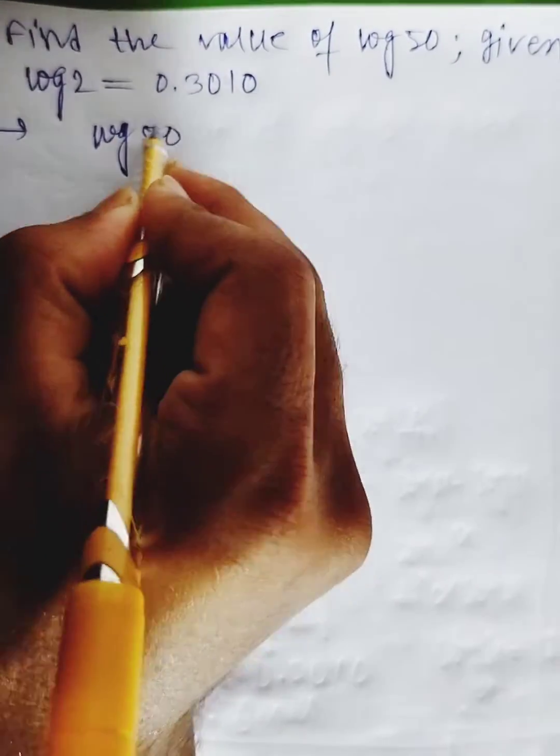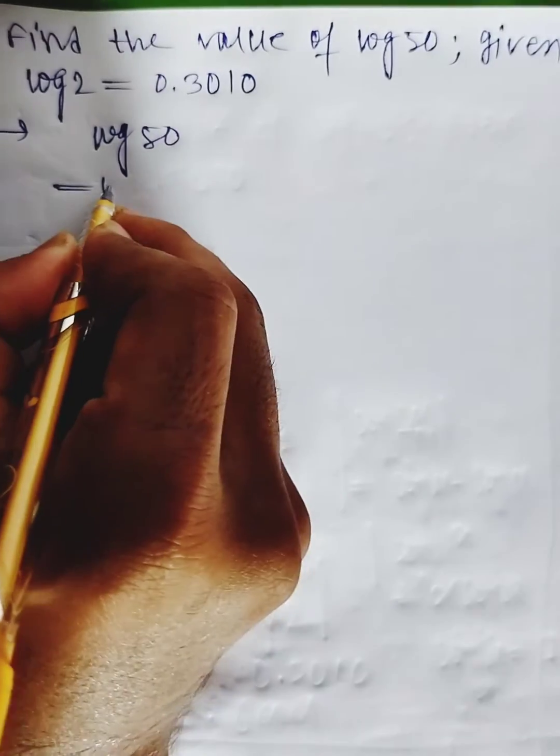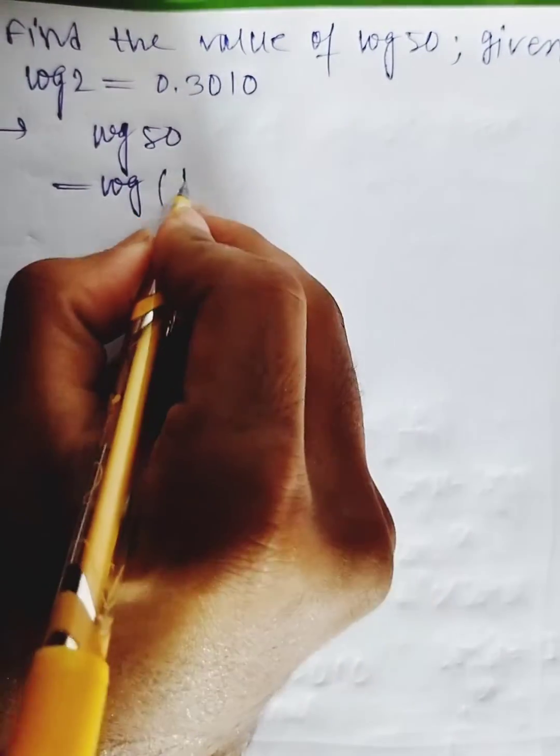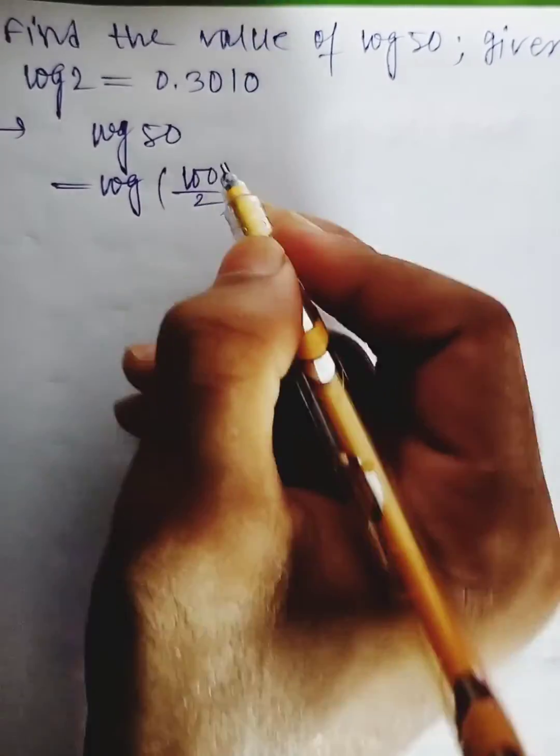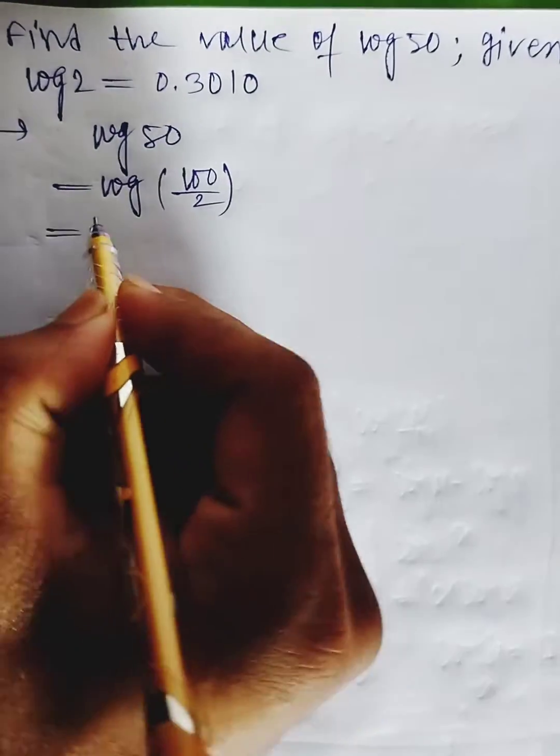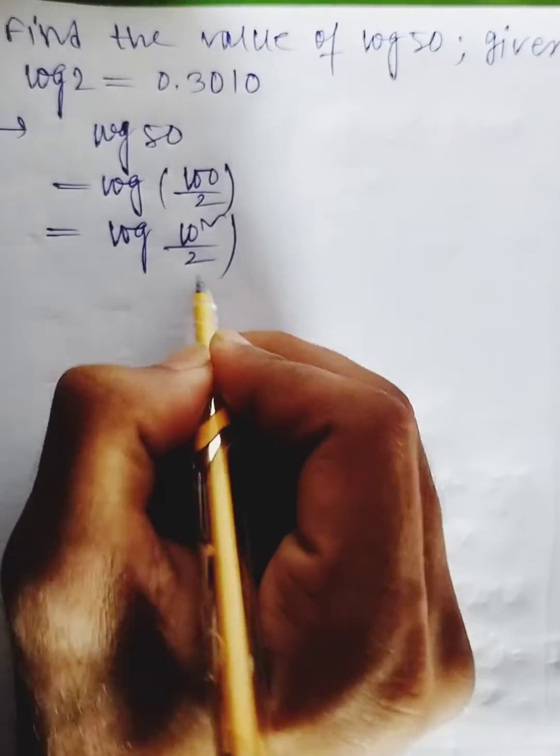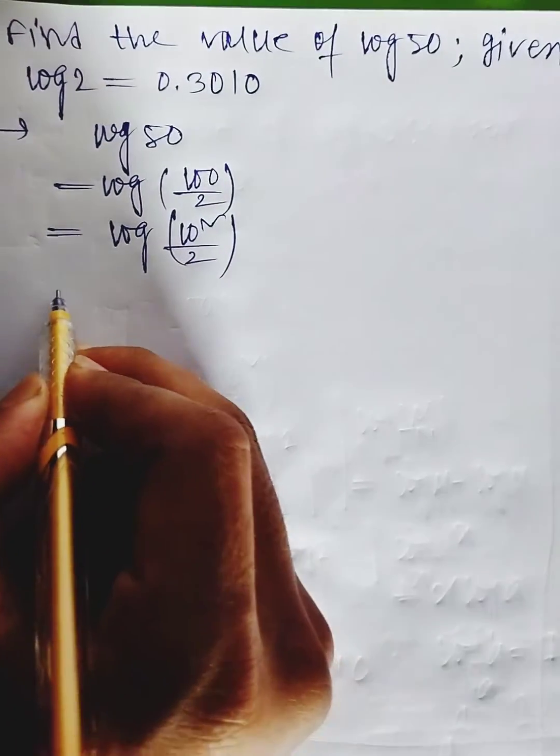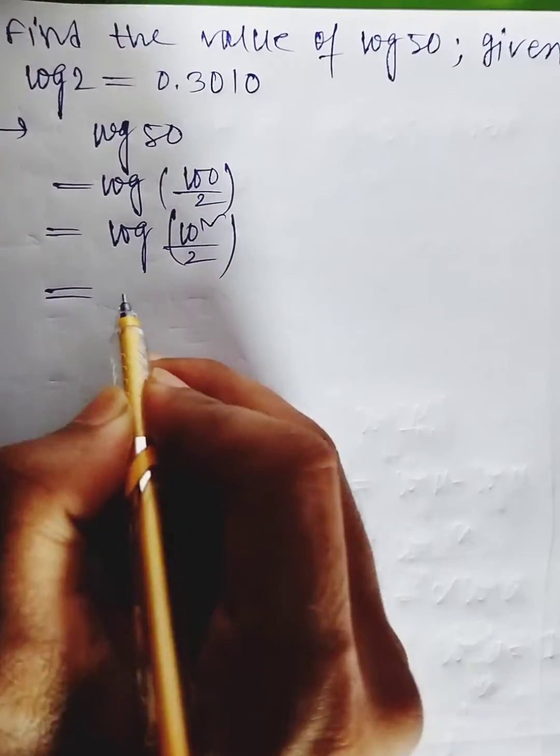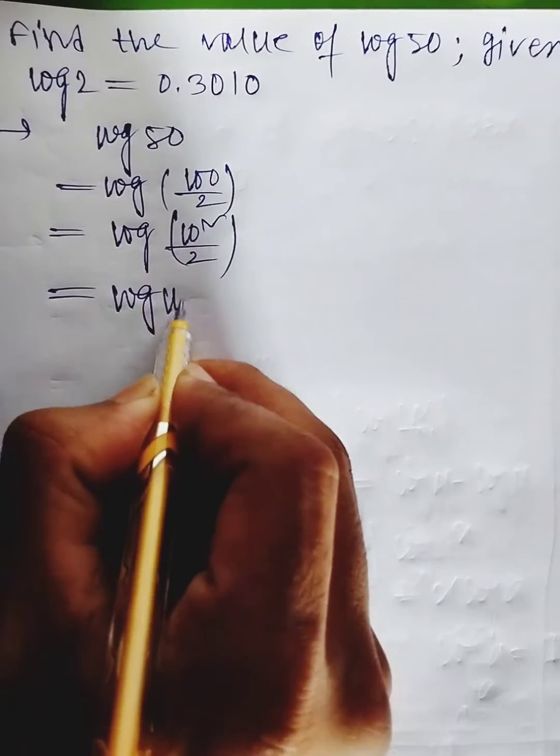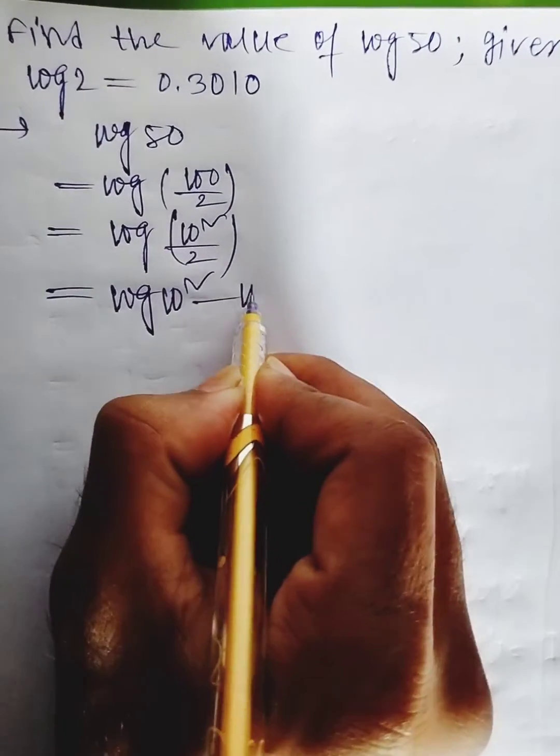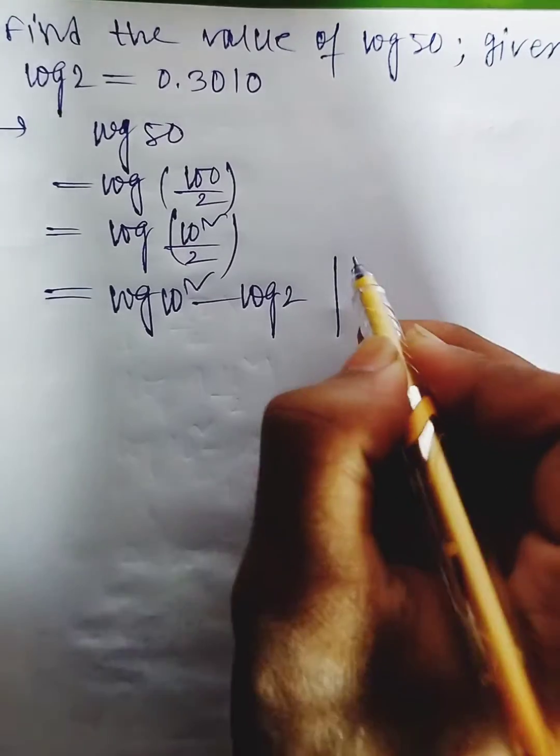Log 50. We can write log 50 as log 100 divided by 2, which equals log 10 squared divided by 2. We can write this as log 10 squared minus log 2.